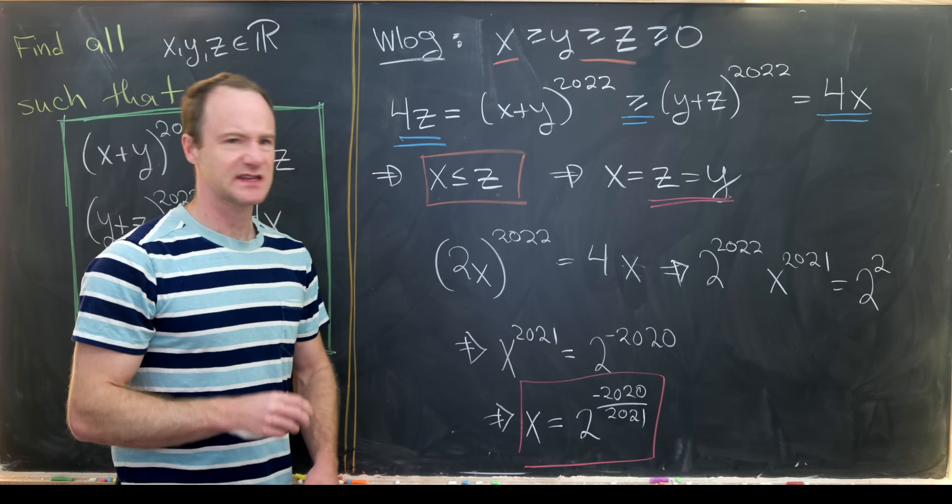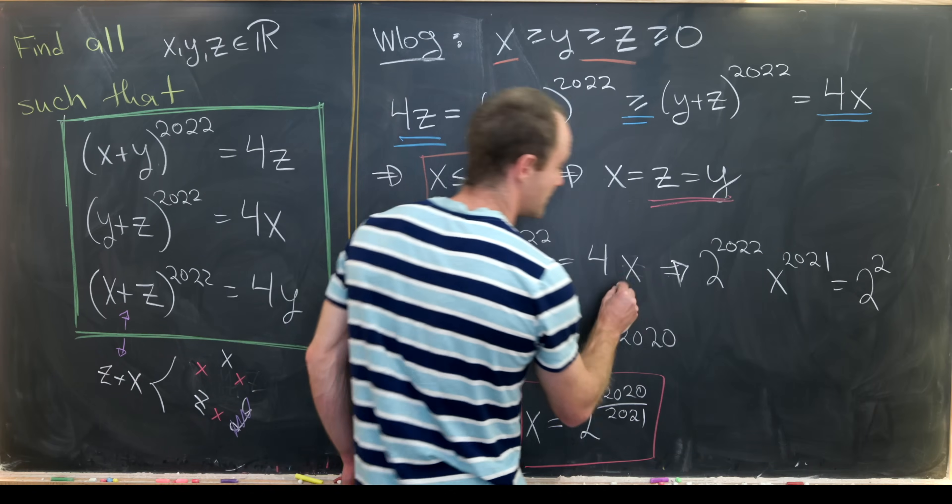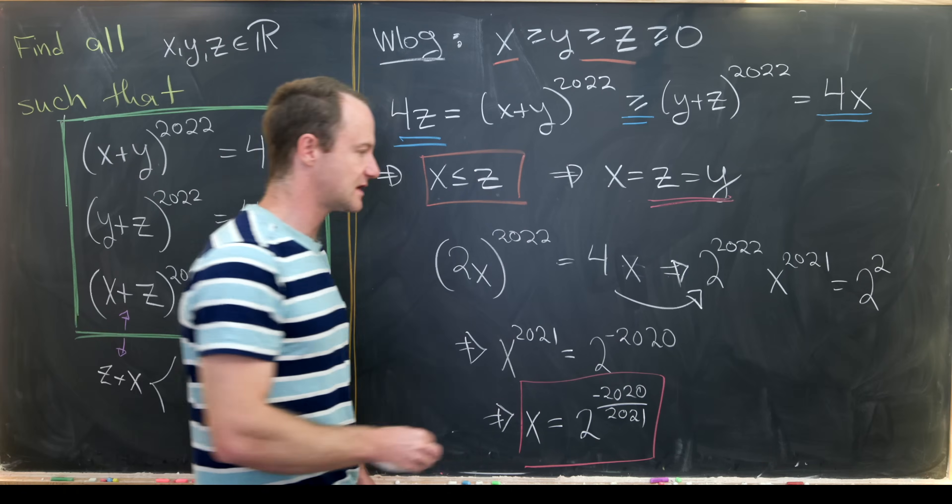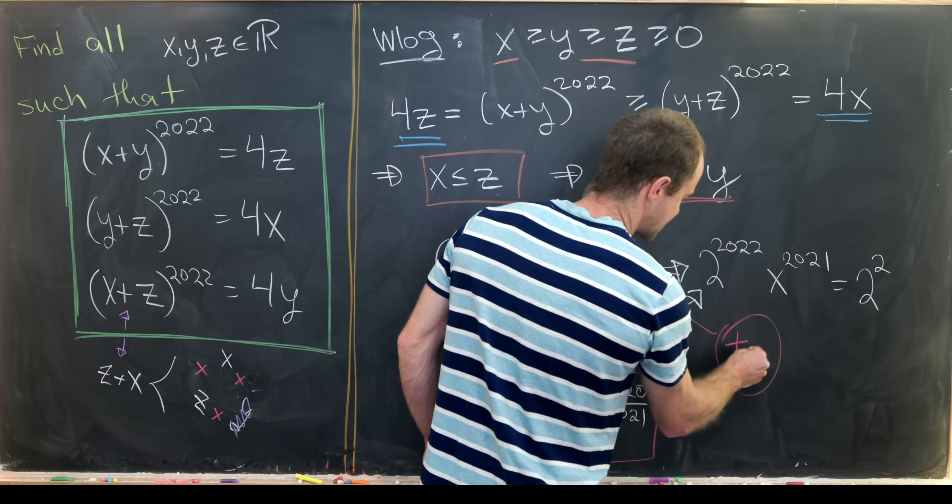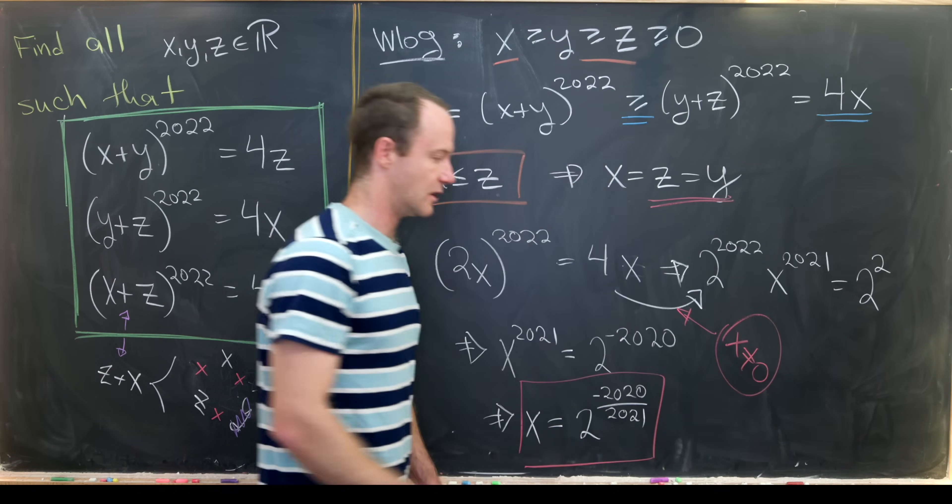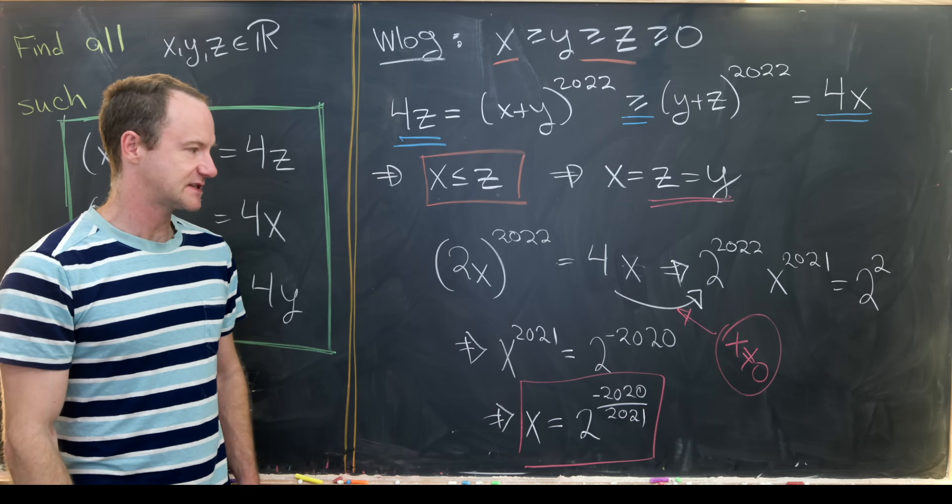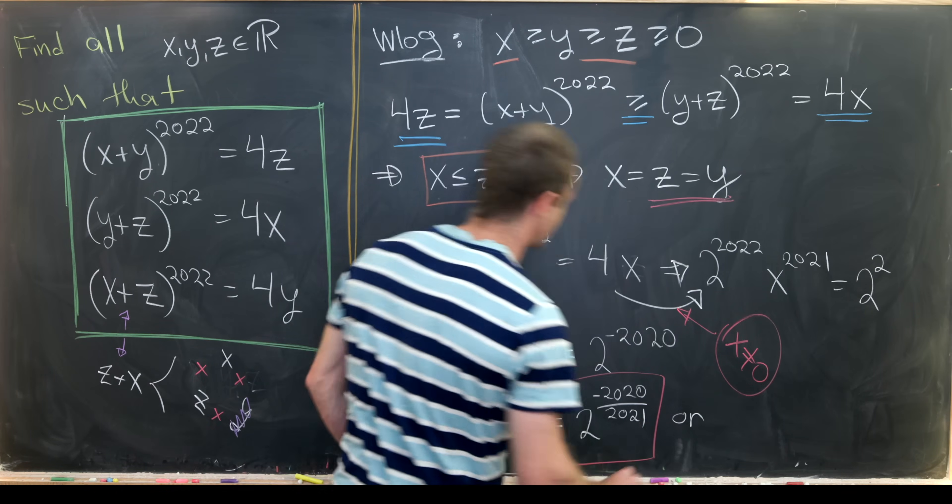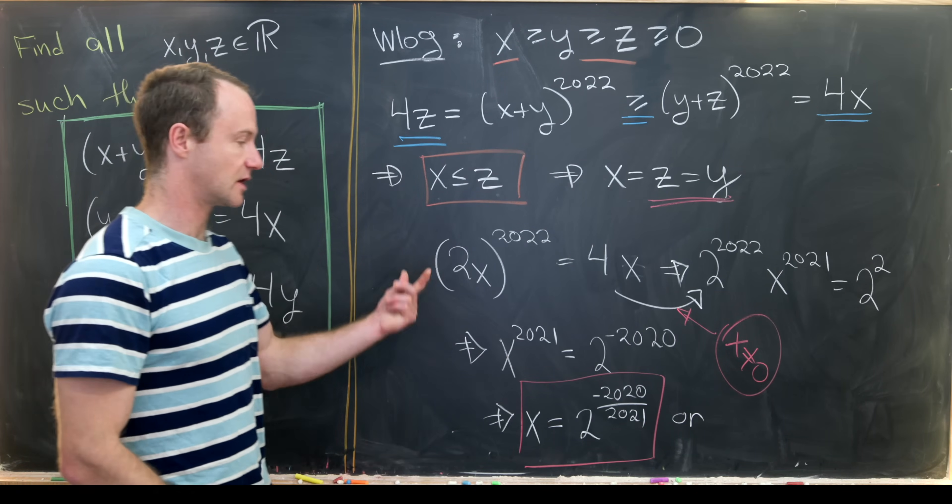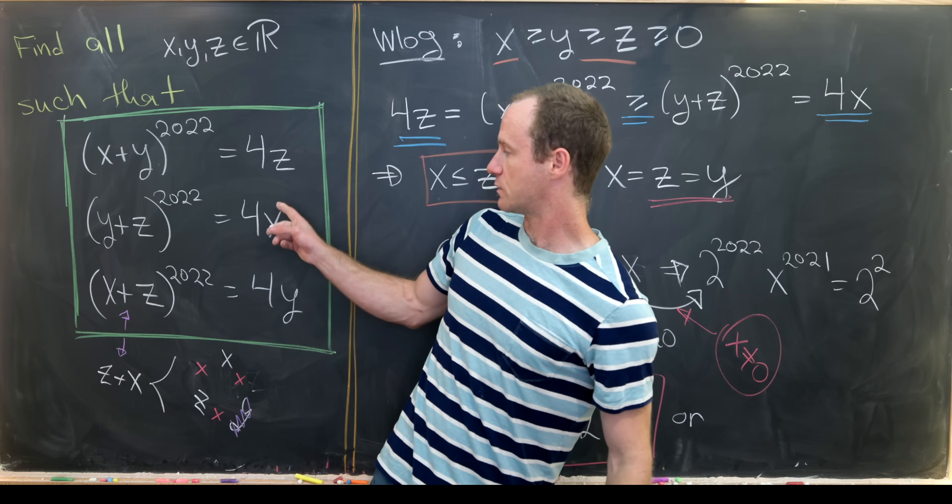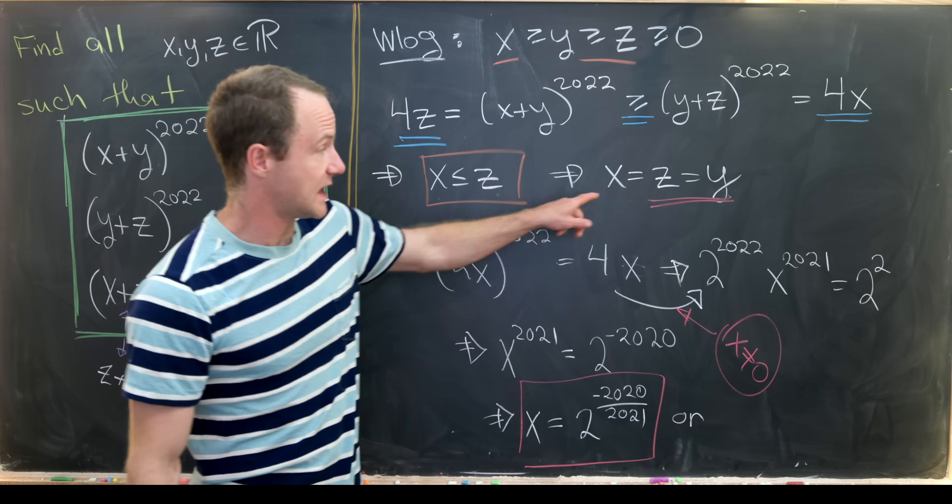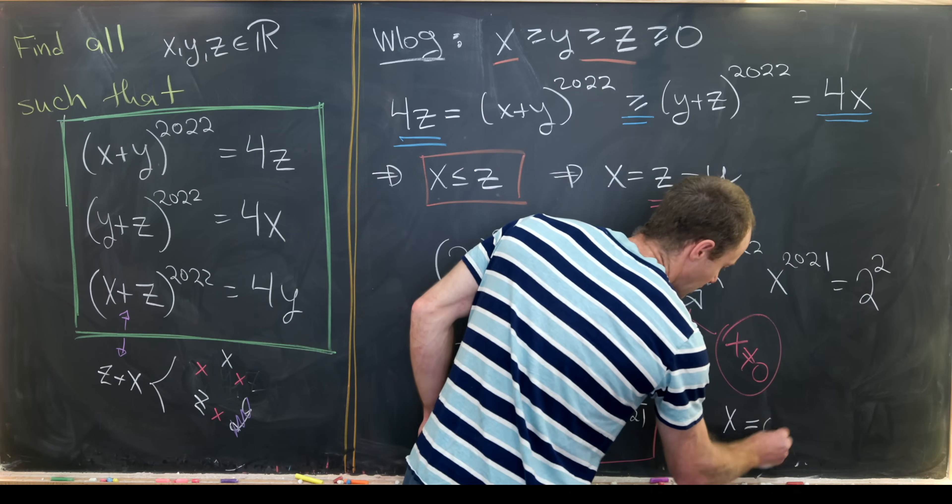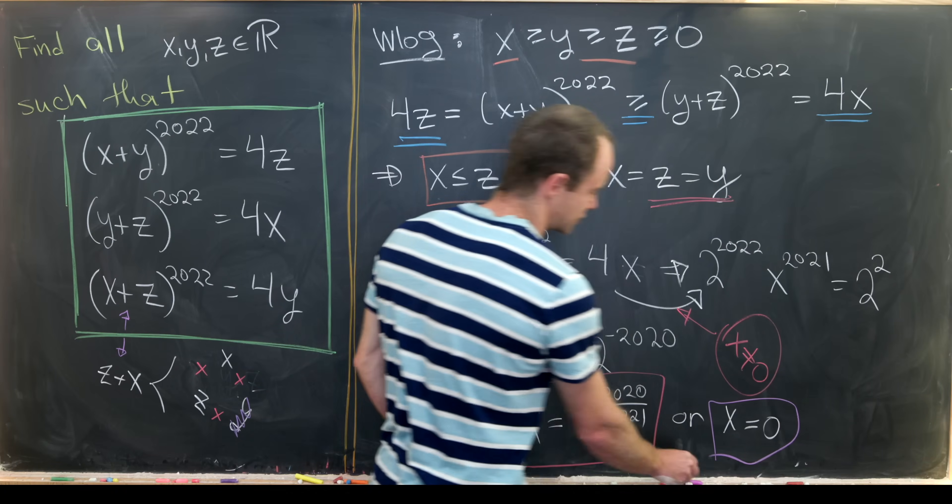I should say we did do something sketchy from this step to this step because we divided by x, but you're only allowed to divide by x if x ≠ 0. So we have to look at the case when x = 0 by itself. But x = 0 is clearly a solution here because we would just have 0 = 0 for all of these. And again, if x is zero, then y and z are also zero.